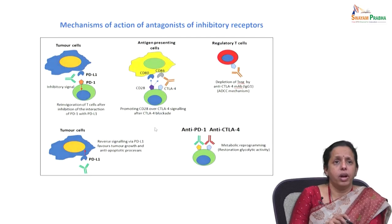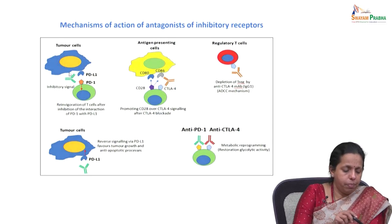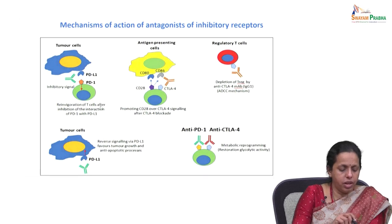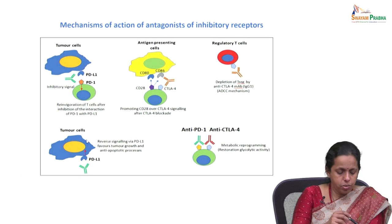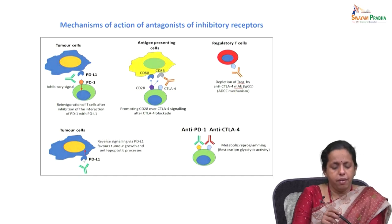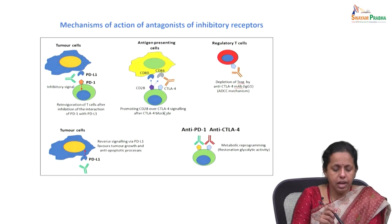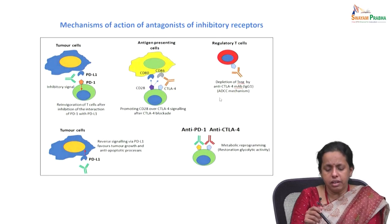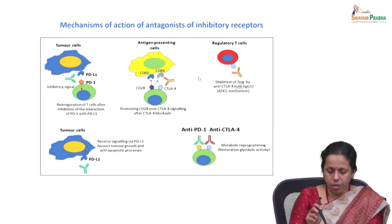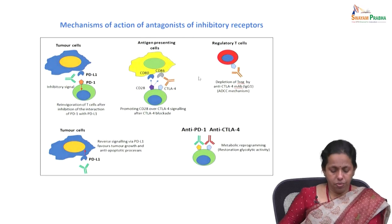This is the typical mechanism of action: you have tumor cells, PD-1, and the immunosuppressive system. There is reinvigoration of T cells after inhibition of the inhibitory interaction. Reverse signaling via PD-L1 favors tumor growth and anti-apoptotic processes. PD-L1 promotes tumor cell growth, while stimulatory molecules such as CD-80, CD-28, and CD-86 promote CD-28 signaling over CTLA-4 signaling after CTLA-4 blocking. Anti-CTLA-4 monoclonal antibodies can deplete regulatory T cells.